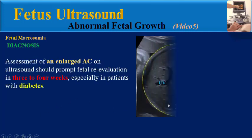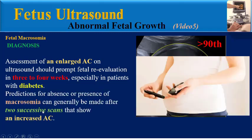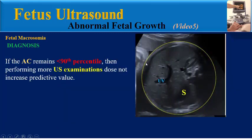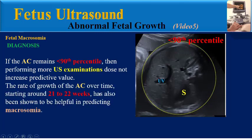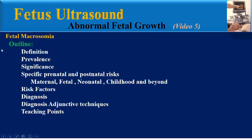Assessment of an enlarged AC on ultrasound should prompt fetal re-evaluation in 3 to 4 weeks, especially in patients with diabetes. Prediction for absence or presence of macrosomia can generally be made after two successive scans that show an increased AC. If the AC remains under the 90th percentile, then performing more ultrasound examinations does not increase predictive value. The rate of growth of the AC over time starting around 21 to 22 weeks has also been shown to be helpful in predicting macrosomia.